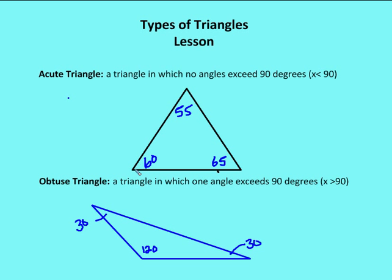An obtuse triangle is a triangle in which only one angle exceeds 90 degrees. In this case, I have an angle of 120 degrees that exceeds 90, so this is an obtuse triangle. I cannot have an obtuse triangle with two angles exceeding 90 degrees because the sum of all angles in a triangle equals 180 degrees. Two angles over 90 would make the sum exceed 180, so in any triangle you can only have one angle that exceeds 90 degrees.